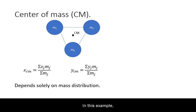In this example, we have 3 equal masses forming an equilateral triangle and the center of mass is the geometric center of the triangle. If any of the masses is greater, the center of mass will be closer to it.